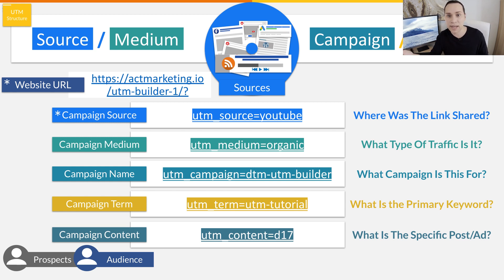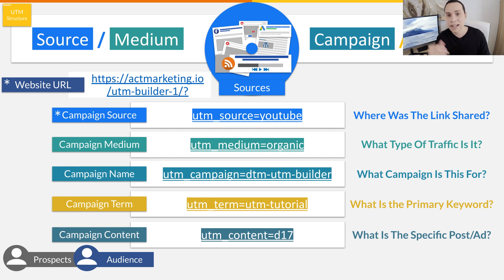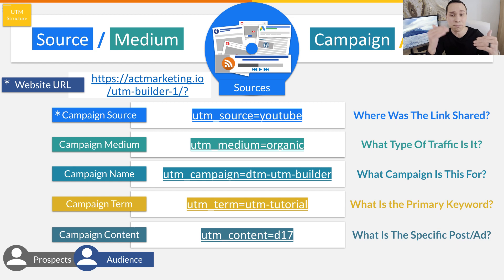Medium tells us how that traffic is coming to you. For example, let's say you have some YouTube ads — we want to know if someone came from YouTube because of an ad or because it was just an organic video post. That's what medium tells us: how people are coming to our website. The source can actually be the same while having multiple mediums.